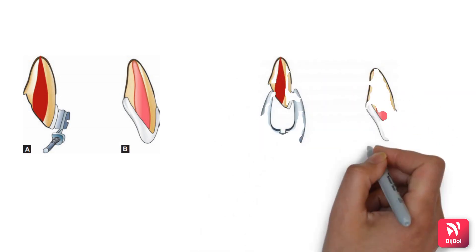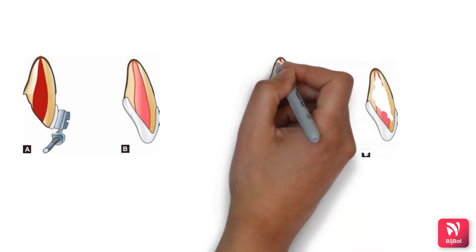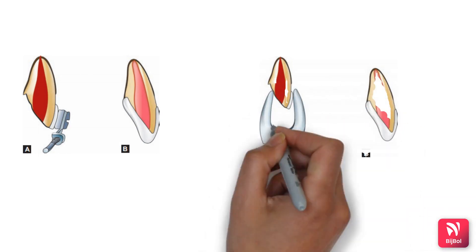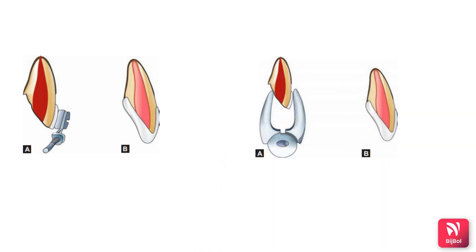When the fracture extends below the alveolar crest level, surgical repositioning of the tissues by gingivectomy or osteotomy should be done to expose the level of the fracture and subsequently restore it. That is how management of crown root fracture is accomplished.